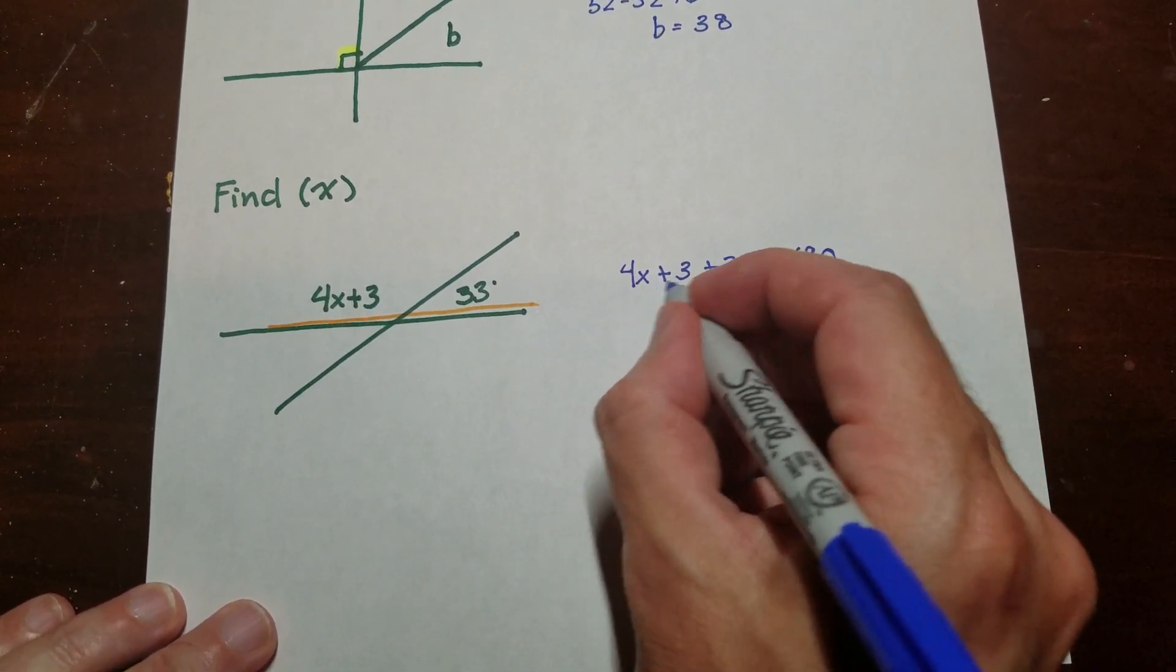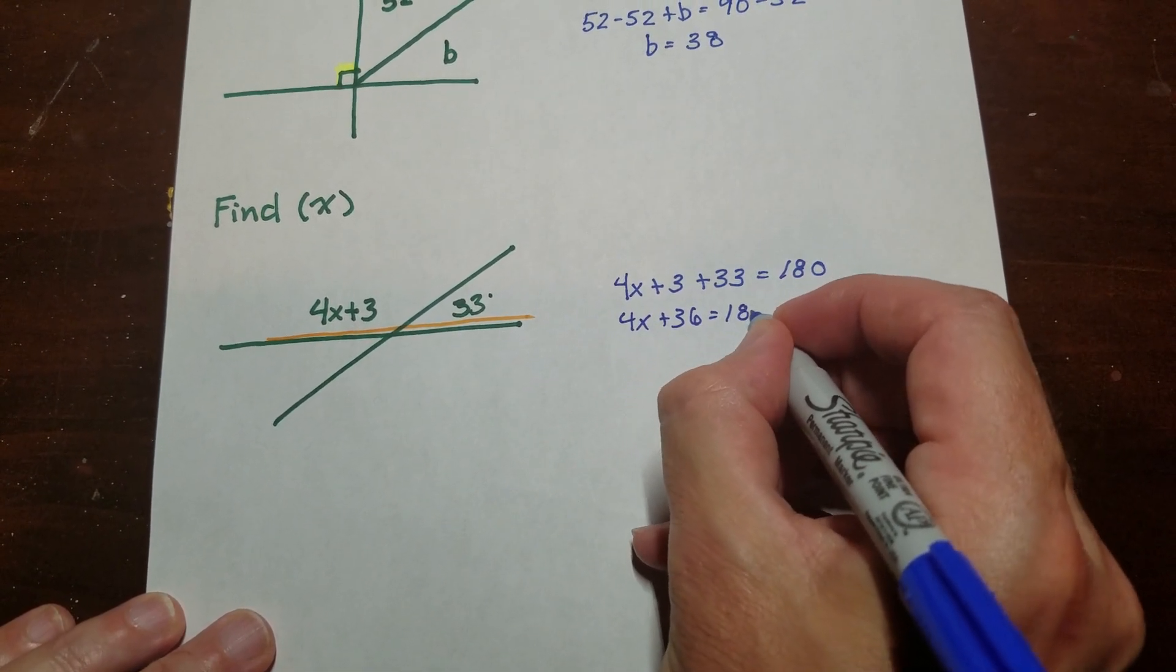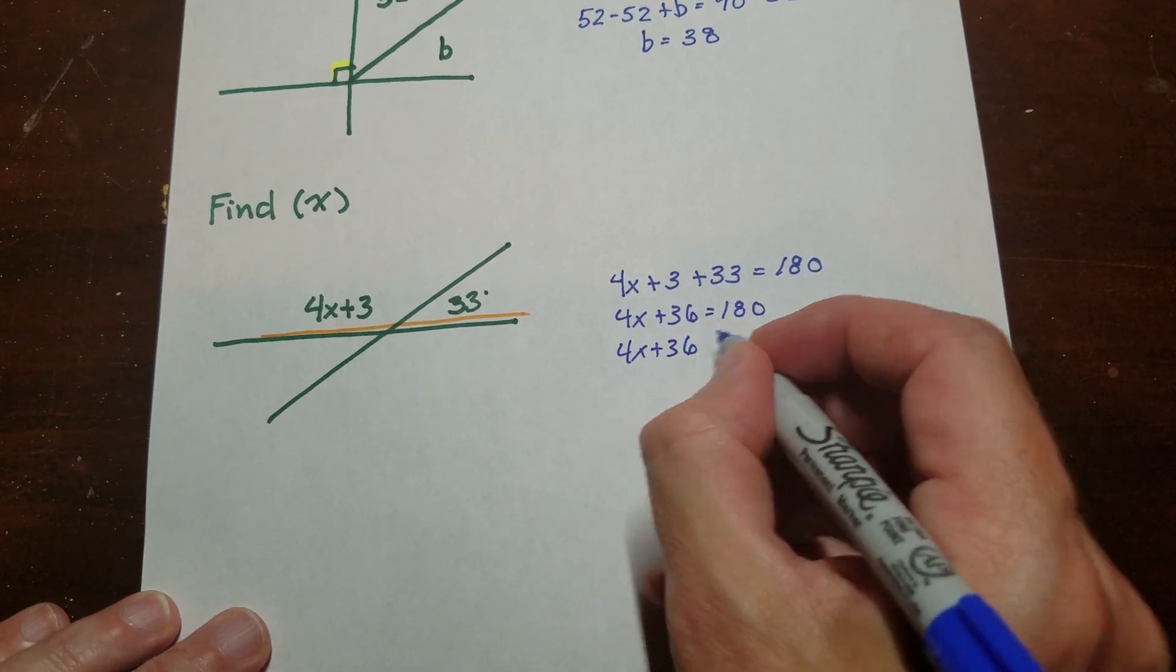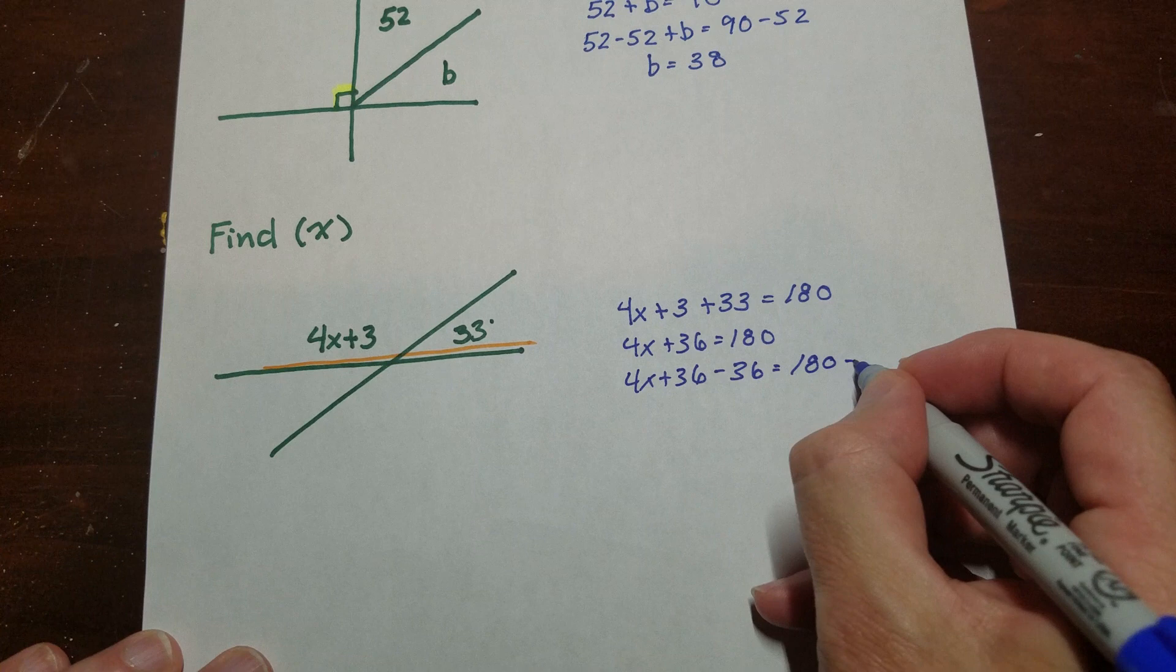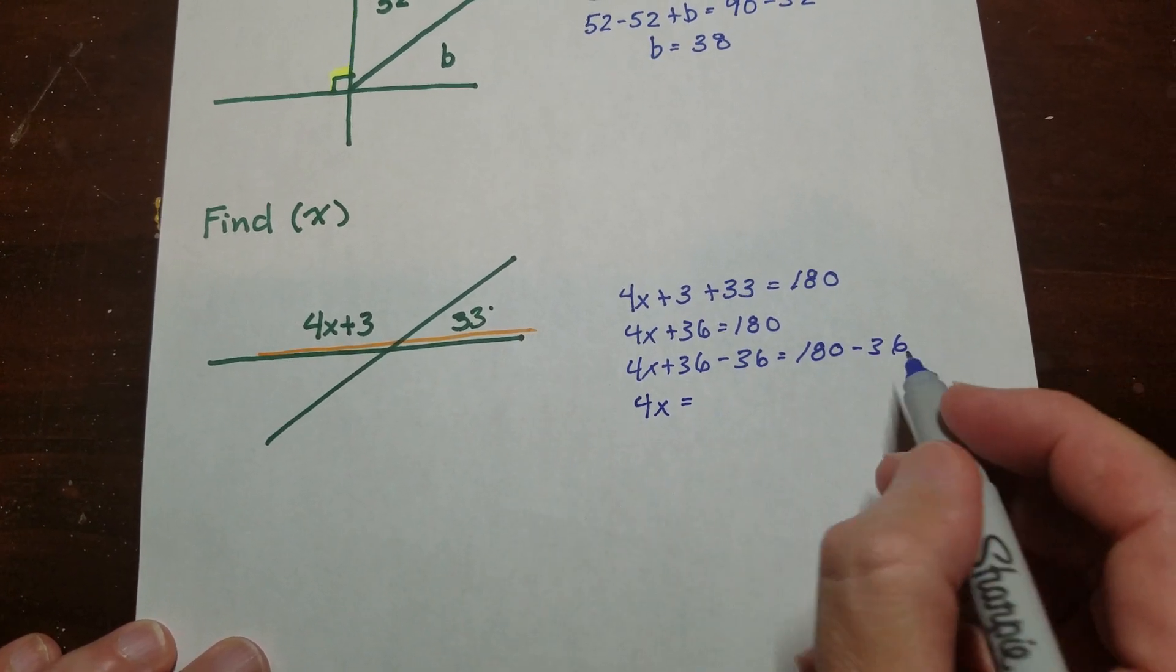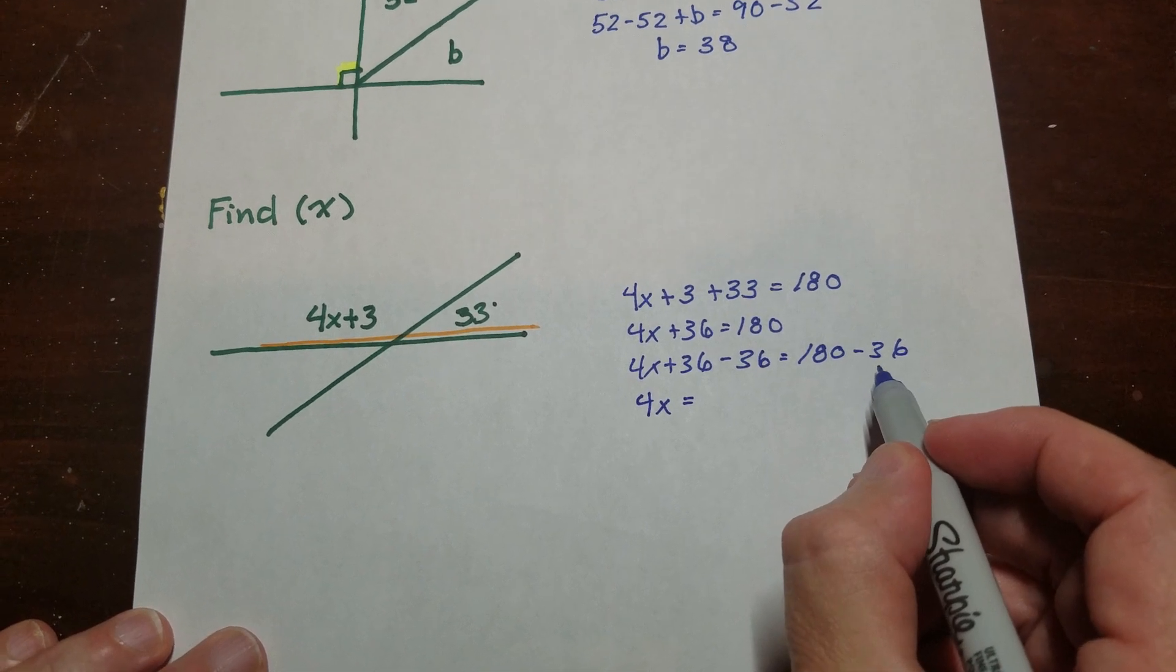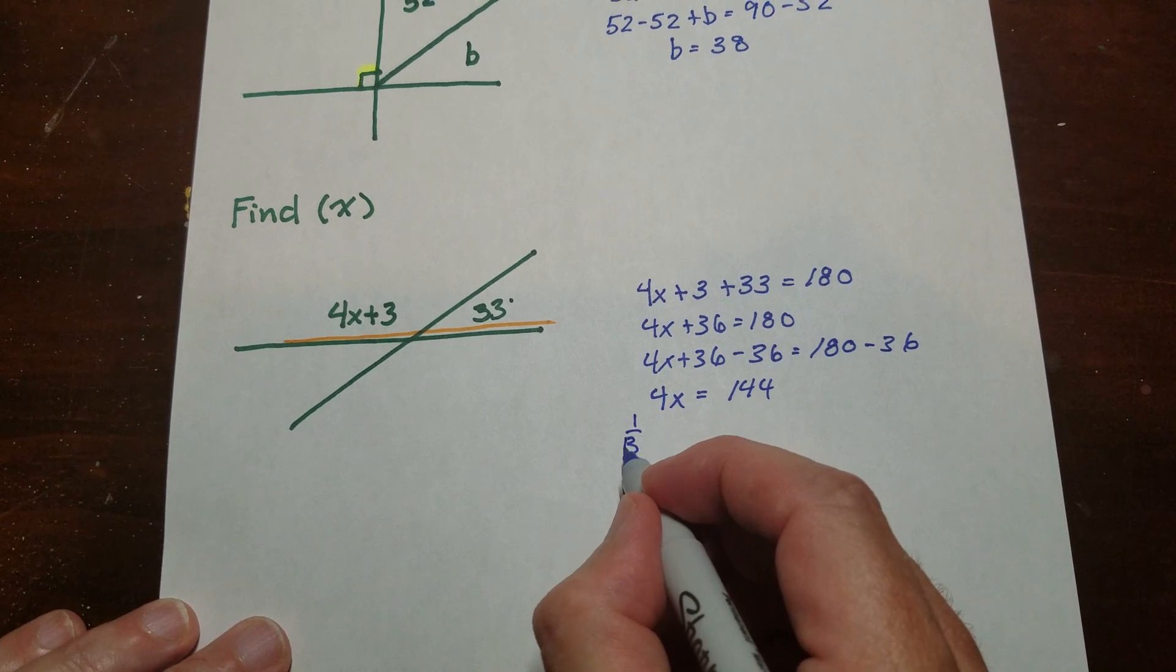And then I'm going to combine those like terms there. Subtraction property of equality. All right, so I think that's 144.